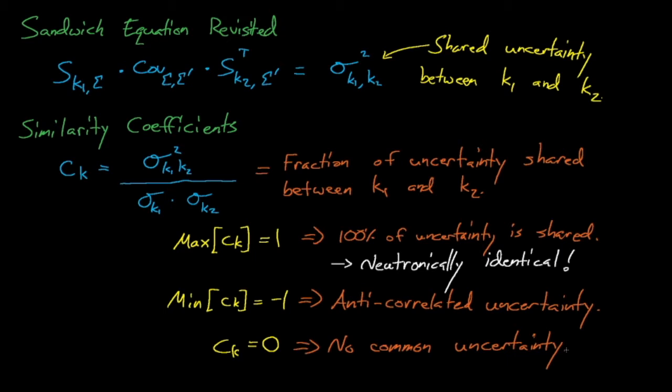Once we identify a set of highly similar benchmark experiments, the idea is to use c-sub-k's as a trending parameter in USL stats, and then to extrapolate the USL stats regression fit to a c-sub-k of one, where, if our trend is strong enough, the extrapolated, inferred bias should approach the true computational bias for our application.